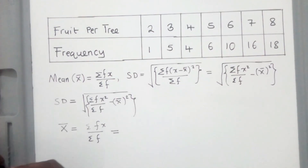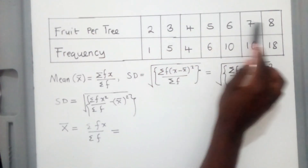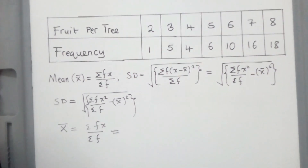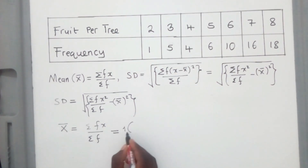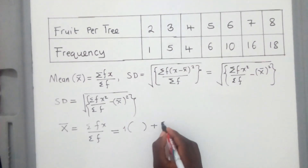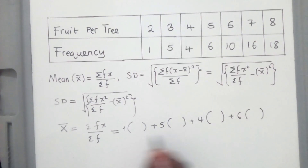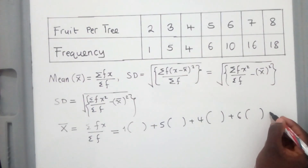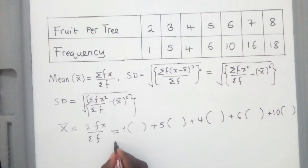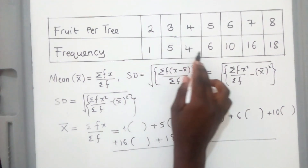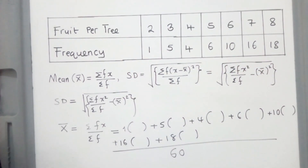The formula for the mean is Σfx / Σf. We haven't been given intervals here — we've been given the midpoints. Get the frequencies: the first one is 1, the second is 5, then 4, then 6, then 10, then 16, then 18 — all divided by the sum of frequencies, which gives us 60. The question tells us there are 60 fruit trees.